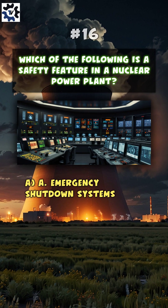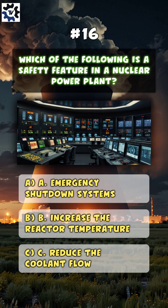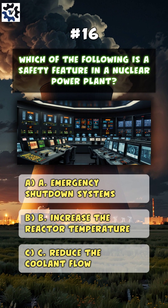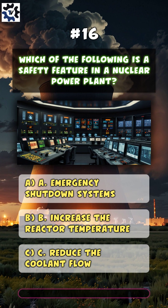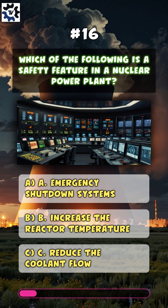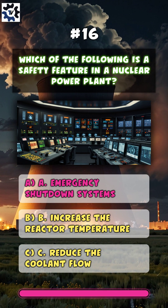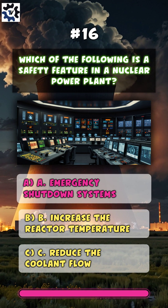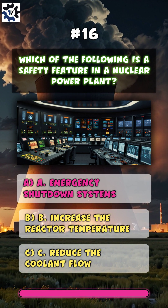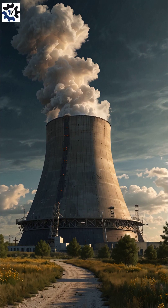Which of the following is a safety feature in a nuclear power plant? A. Emergency shutdown systems.